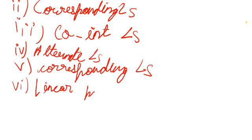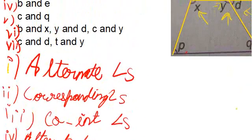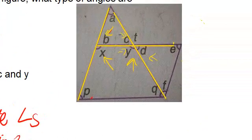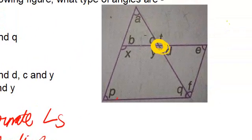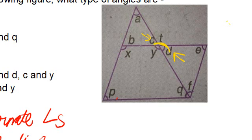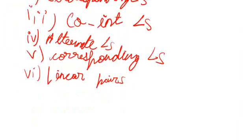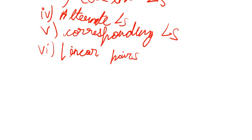For the last part, angles C and D, and T and Y: these angles are formed by intersecting lines and are not on a straight line together — they are opposite to each other at the intersection. So both pairs are vertically opposite angles.